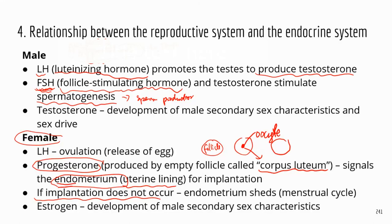Another main female sex hormone is estrogen — probably something people are more aware of, especially if you're taking birth control pills, which contain estradiol, the main type of estrogen. Estrogen is responsible for the development of female secondary sex characteristics, such as development of breasts, fat distribution in the body, and changes in the pelvis. Those are the main hormones involved in the female and male reproductive systems.